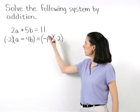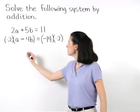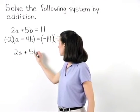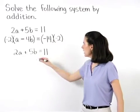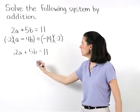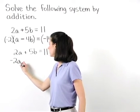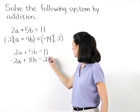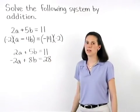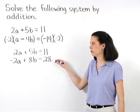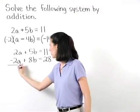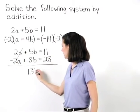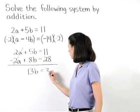Rewriting both equations, we have 2a plus 5b equals 11, and for our second equation, we have negative 2a plus 8b equals 28. Now when we add our two equations together, our a terms will cancel out, and we have 13b equals 39.